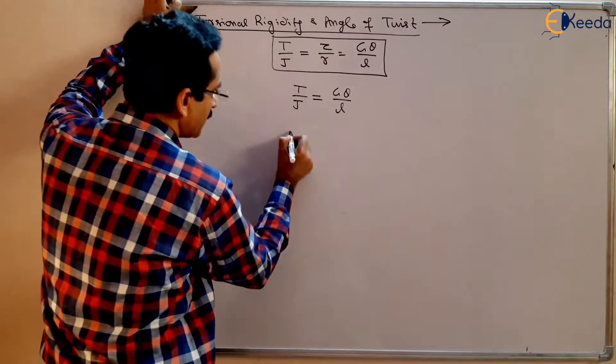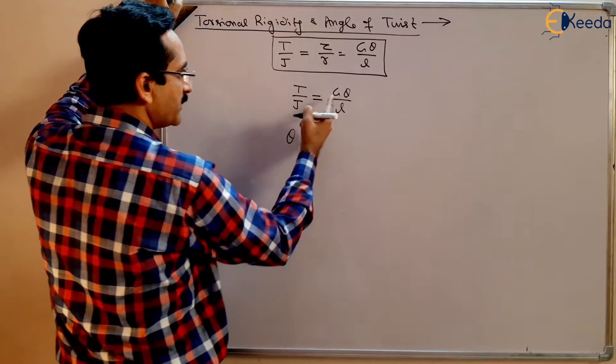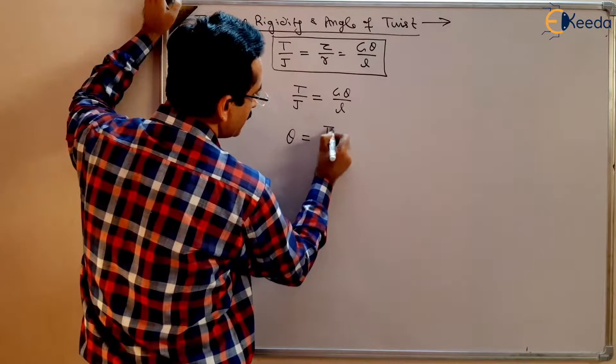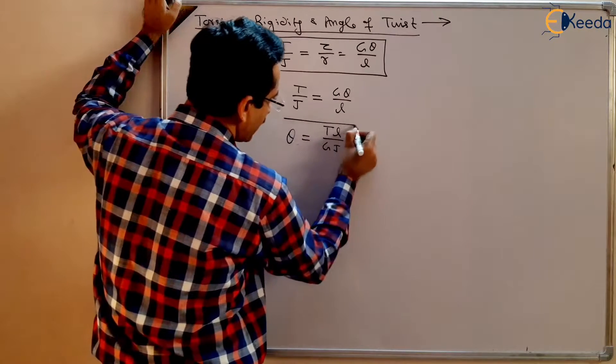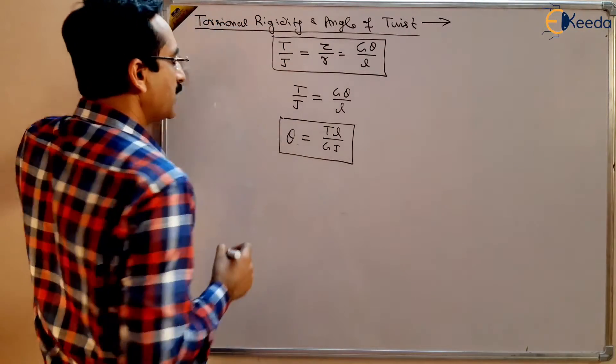From here, what is theta? Theta is TL upon GJ. This is the angle of twist.